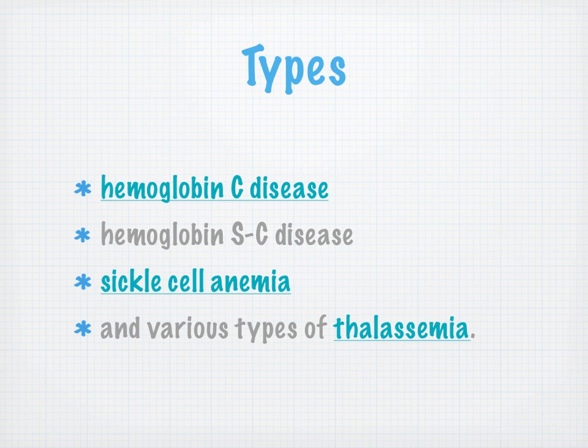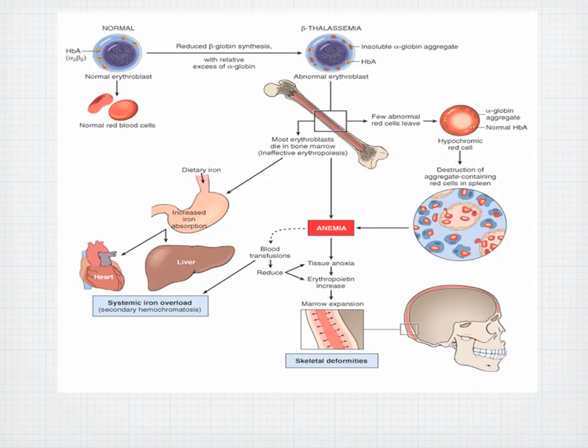So what types of hemoglobin disease are we looking at? Hemoglobin C, hemoglobin SC, sickle cell anemia, and various types of thalassemia. The normal erythroblast on the left is defined by alpha-2 beta-2, hemoglobin A. If we have reduced beta-globin synthesis with a relative excess of alpha-globin, we now have what's called beta-thalassemia. We end up with an insoluble alpha-globin aggregate with our hemoglobin A, giving us an abnormal erythroblast.